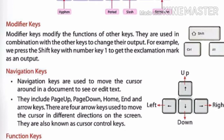The first one is modifier keys. Modifier keys modify the function of other keys. They are used in combination with other keys to change their output. For example, we press the shift key with the number 1 to get an exclamation mark as an output.